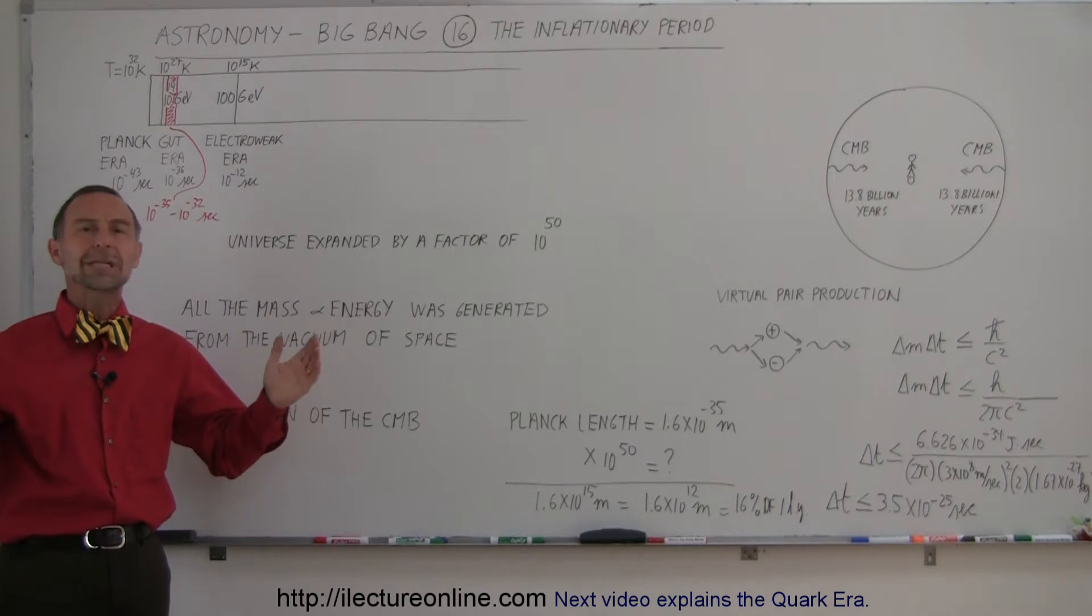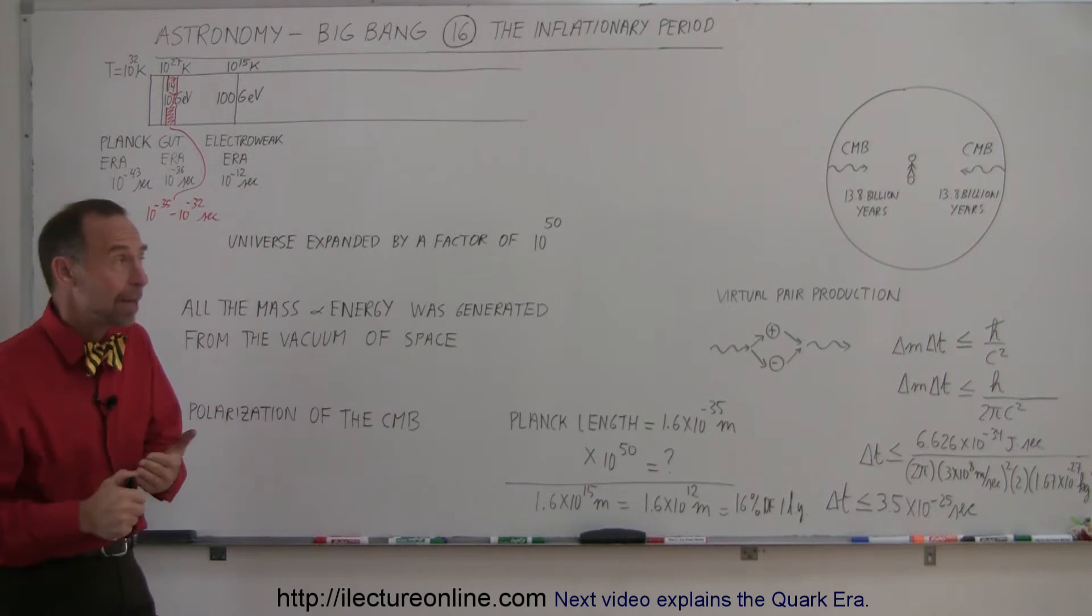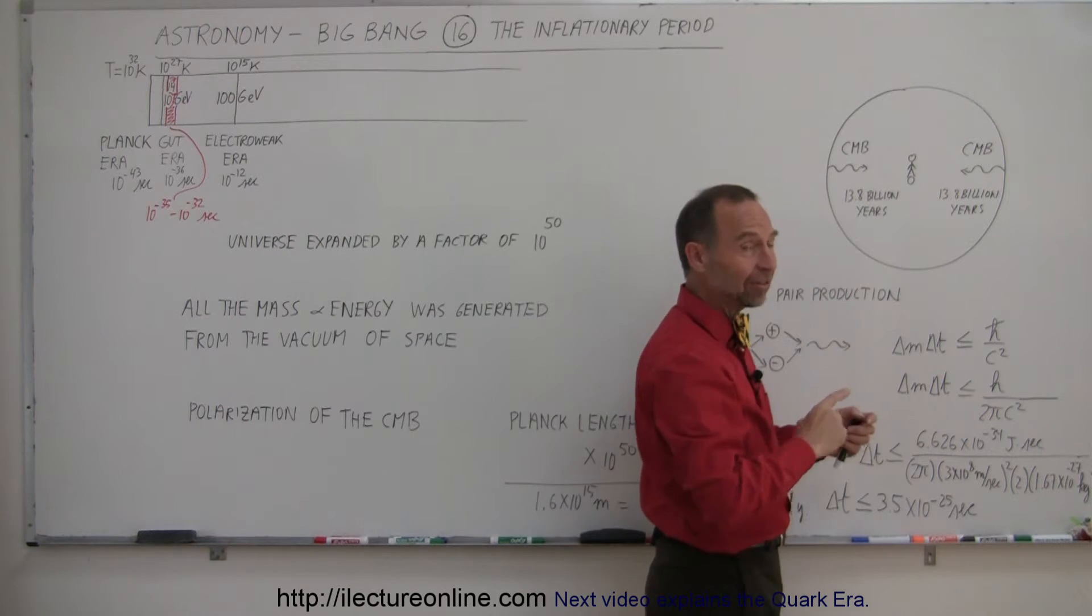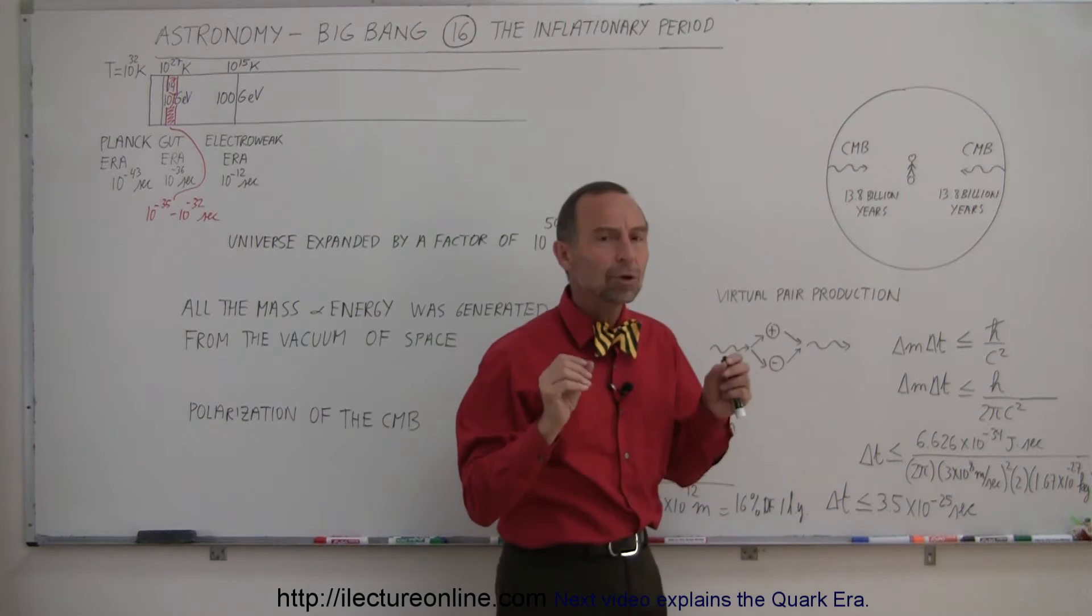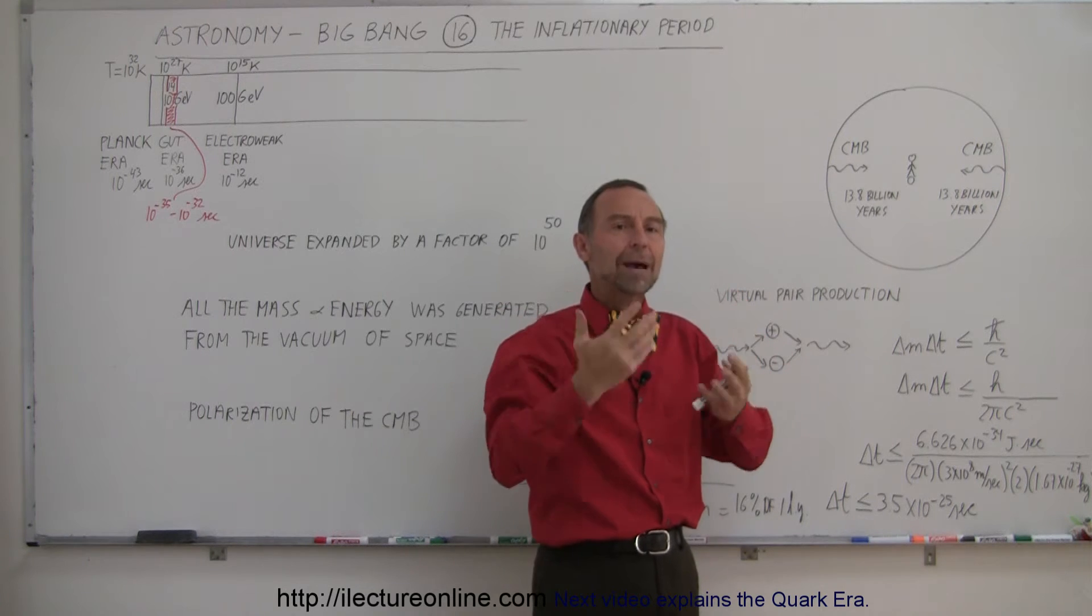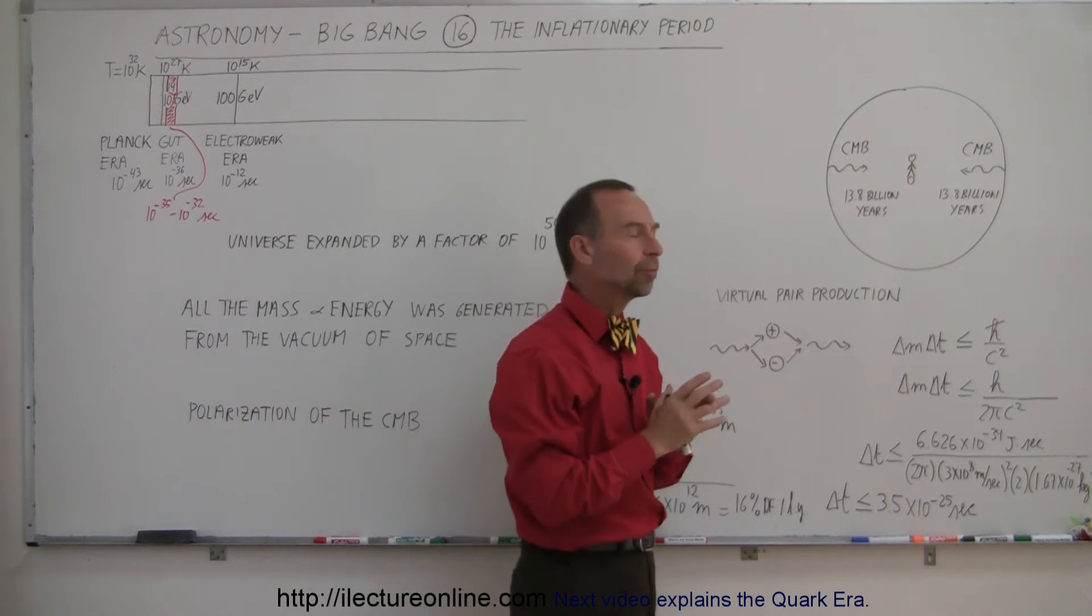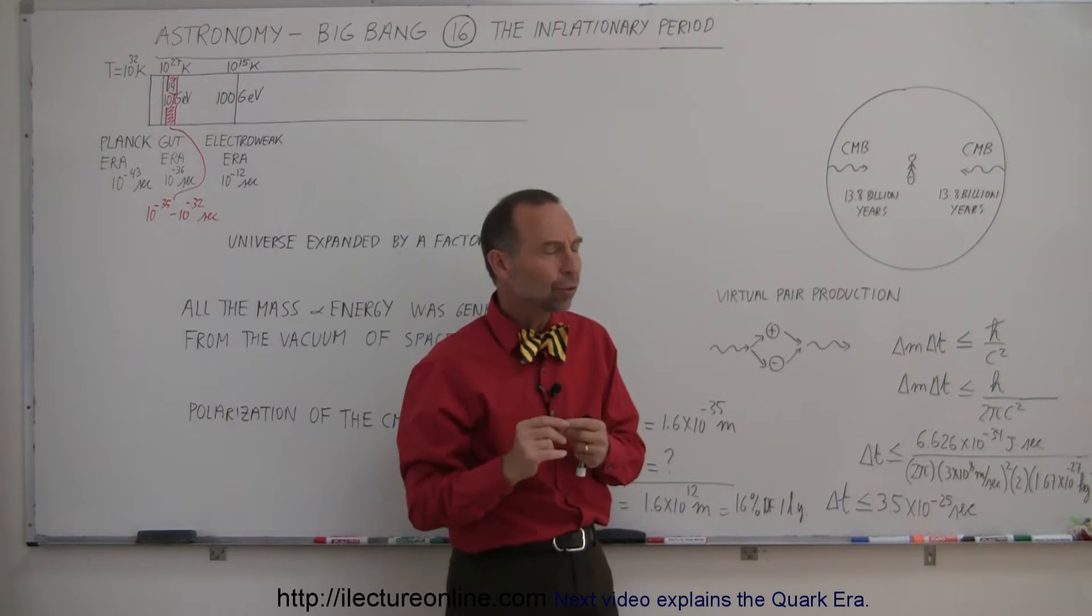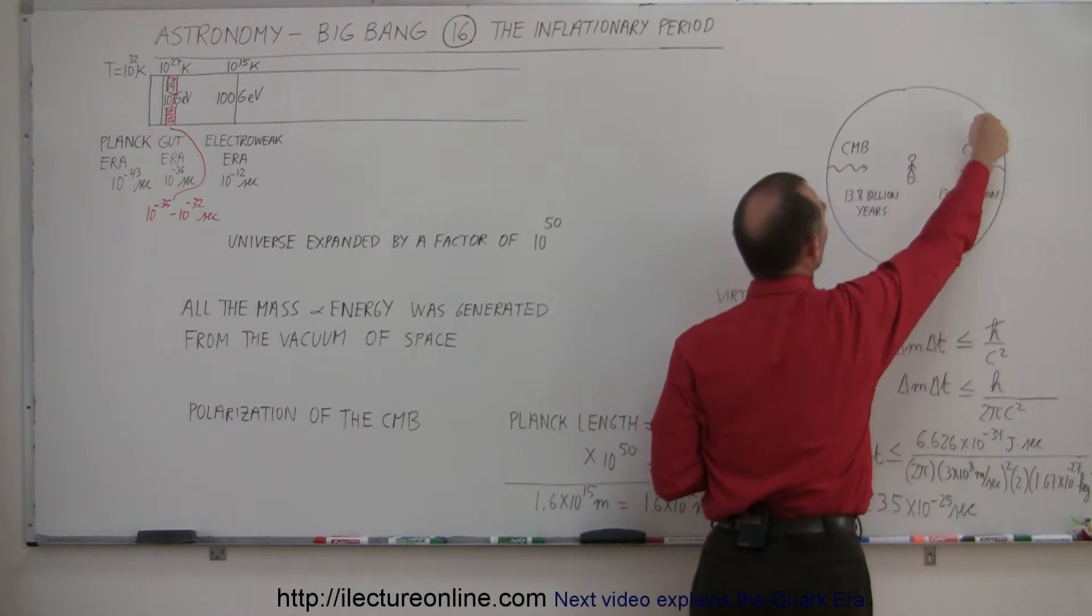But first I want to talk about why we needed something like the Inflationary Period, why they believed that it had to be there, otherwise the universe could not be explained. Let's say we look at our universe today. Here we are, sitting on our planet Earth, or standing in this case. The observable universe has a radius of 13.8 billion years. We're still receiving radiation from the cosmic background. The cosmic background microwave radiation is still upon us, reaching us from all areas of space.